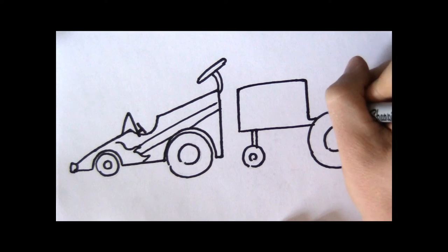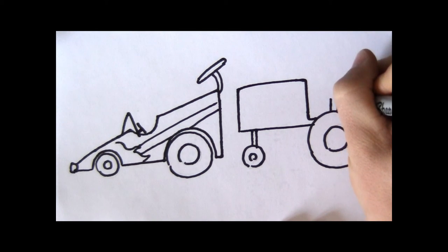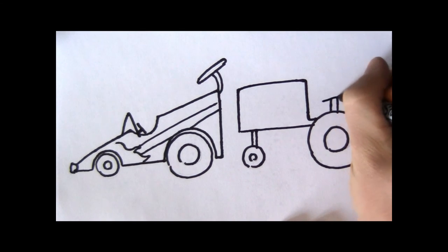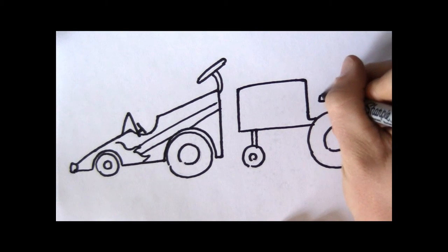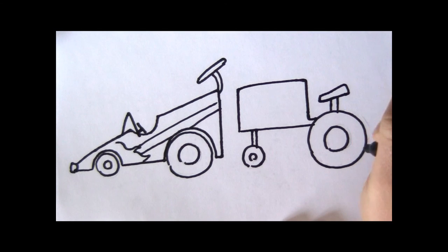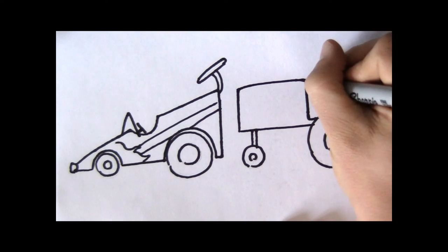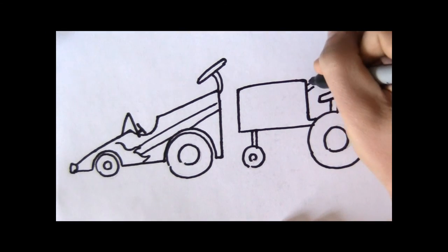Have you ever ridden on a tractor? We're going to draw another two lines that come up from that wheel and make a seat. We need a steering wheel.